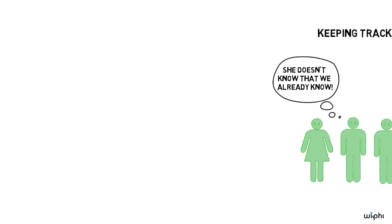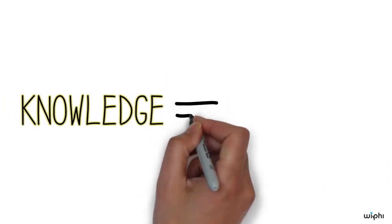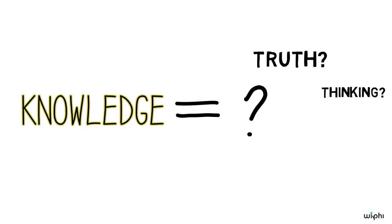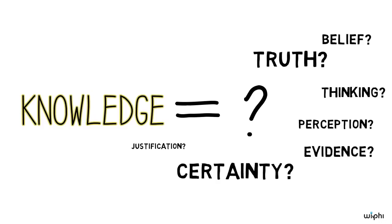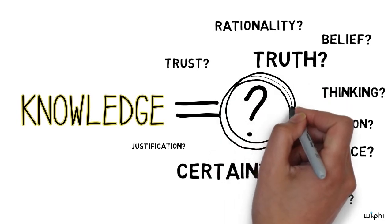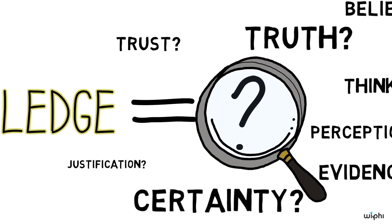But it's surprisingly difficult to give a good explanation of the nature of knowledge itself and to say how knowing that something is true differs from just thinking that it's true. When we try to figure out what knowledge is, we encounter some interesting questions and paradoxes. This series explores these problems and explains how philosophers have tried to solve them.